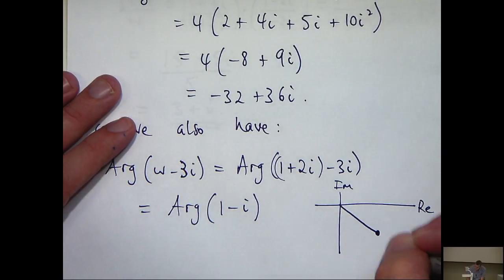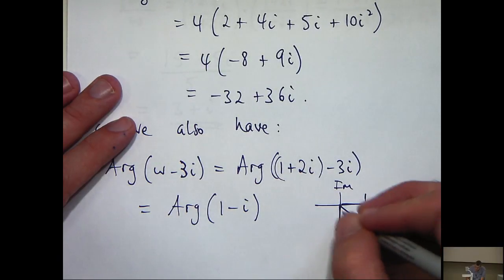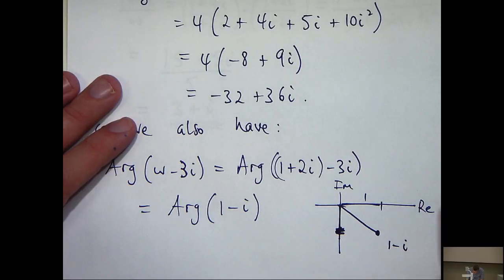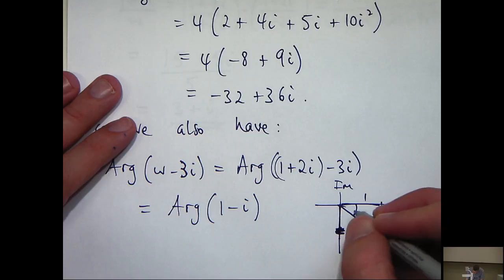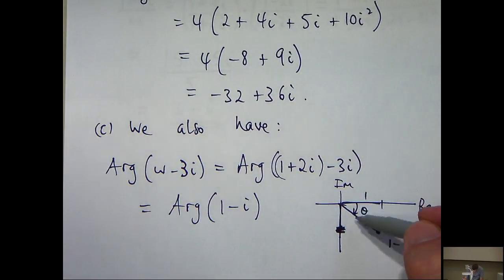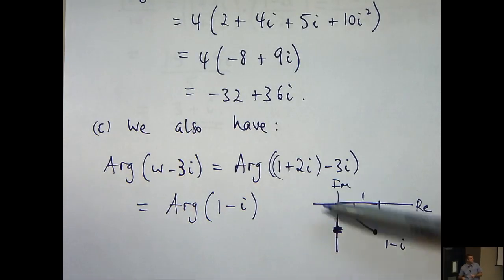It's going to look something like this. So the length here is 1. The length here is 1. Okay. It's not very accurate. Okay. And what I'm after is this angle here. Now notice that to go to the positive real axis. Okay. I'll form the real axis to the complex number.